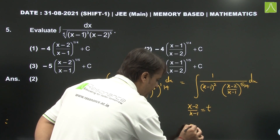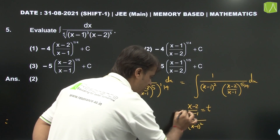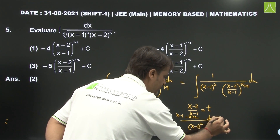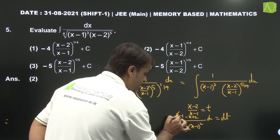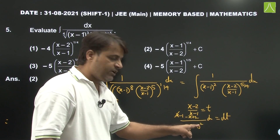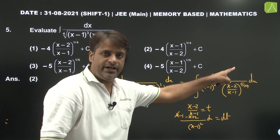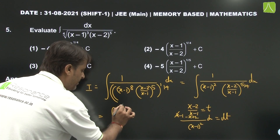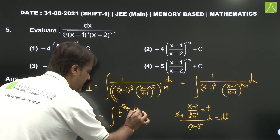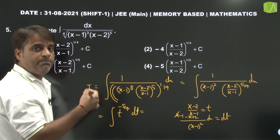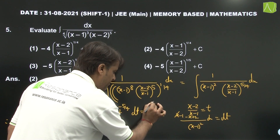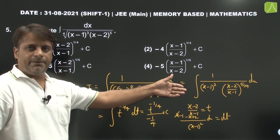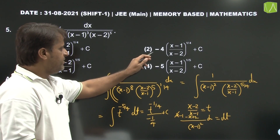From x minus 1 whole squared, differentiating: (x minus 1 minus x plus 2) dx equals dt, so (1 upon (x minus 1)^2) dx equals dt. The integral reduces to integration of t^(minus 5/4) dt, which equals t^(minus 5/4 plus 1) divided by (minus 1/4) plus constant. Replacing t's value gives answer number 2.